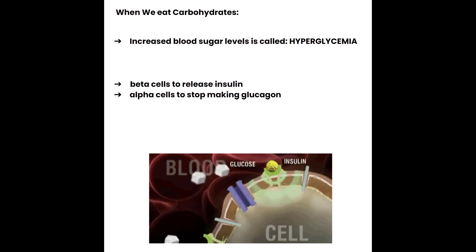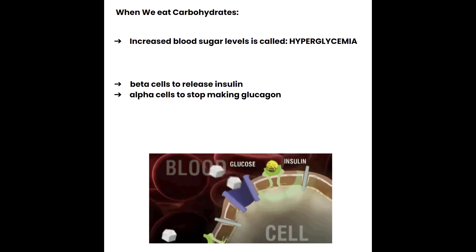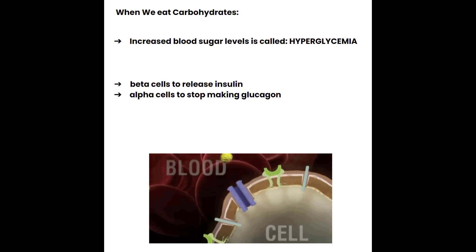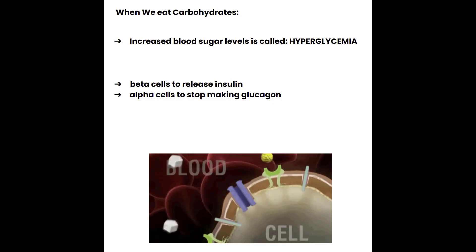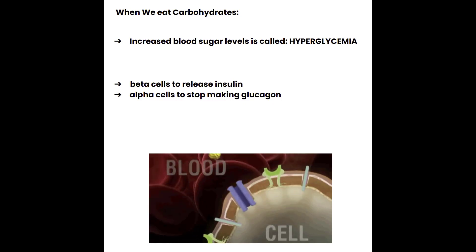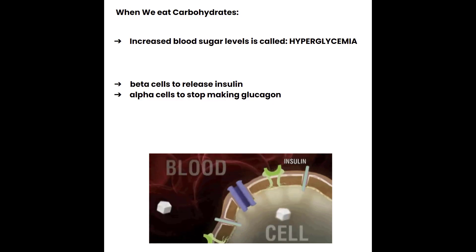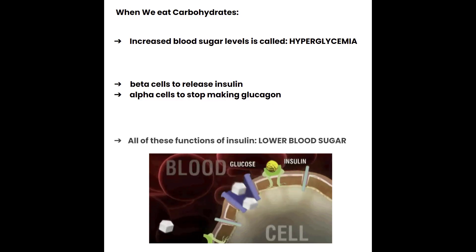Muscle cells are also told to make proteins because they now have the energy to do it. Liver cells are going to be told to stop making sugar, start making glycogen, and make more fat. Insulin's main job is to tell cells to bring sugar inside the cell because there's work to do — by doing so, all of these functions are going to lower the blood sugar.